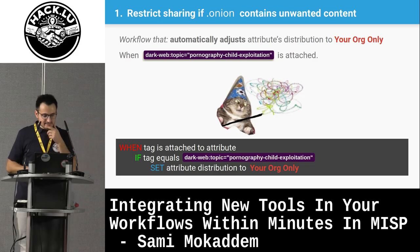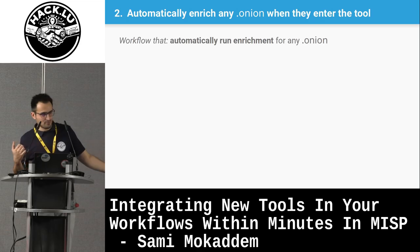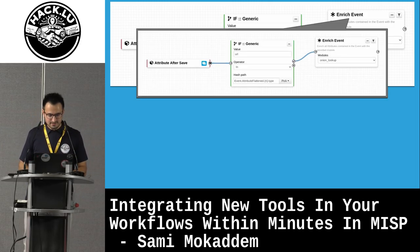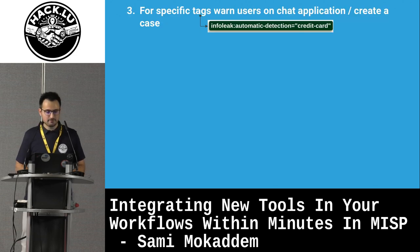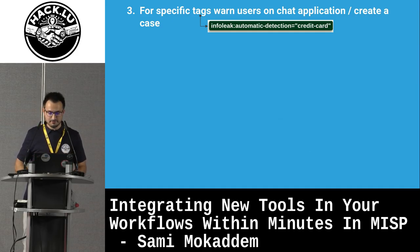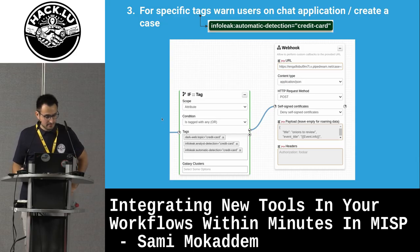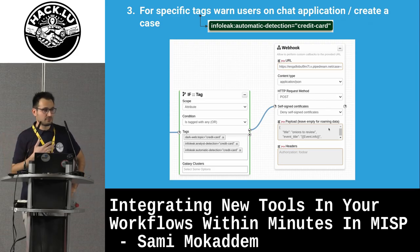That was the first task. The second task — automatically enriching any onion that enters the system — I cannot test because the enrichment module wasn't working, unfortunately. The last step: when a specific tag is attached, create a task in our case management system. It's extremely simple. When you check for the tag — if it contains a credit card marker — you call the webhook module, which allows you to issue HTTP requests to any service. You put the URL and the content to be sent, and it creates the task in the case management system.